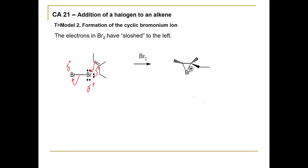A pair of electrons attacks back at one of the carbons that was participating in the pi bond. As a result, we form a cyclic bromonium ion, or halonium ion — this would also apply if the halogen were chlorine or iodine. You can see the ring structure represented here. If we calculate formal charge, the bromine has a positive formal charge, but electron density is being pulled away from the carbons.